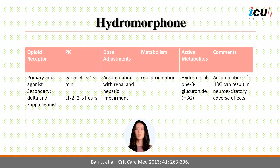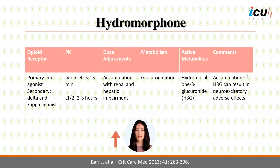Hydromorphone is a semisynthetic opioid agonist derived from morphine. While it primarily acts on the mu receptors, it activates the delta and kappa receptors to a lesser extent and may be associated with more euphoria due to the effects from the kappa receptors. Onset is slightly longer compared to fentanyl at 5–15 minutes, with a similar half-life of 2–3 hours. Accumulation can be seen with renal and hepatic impairment; intravenous doses should be reduced by 50% in patients with a creatinine clearance less than 60 mL per minute, and 25–50% in patients with moderate to severe hepatic impairment.